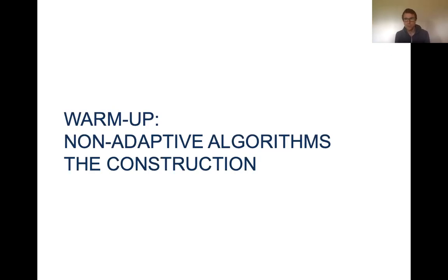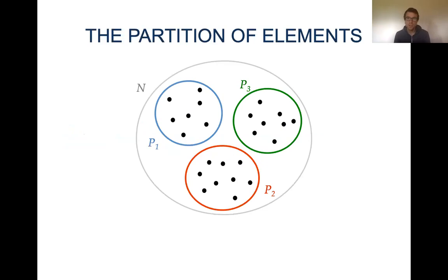We want to construct a family of functions that is hard to minimize. These functions will depend on a partition of the elements. We will partition the ground set of n elements into three parts: P1, P2, and P3. We want part P3 to be the optimal solution — the unique set of elements that minimizes the submodular function.